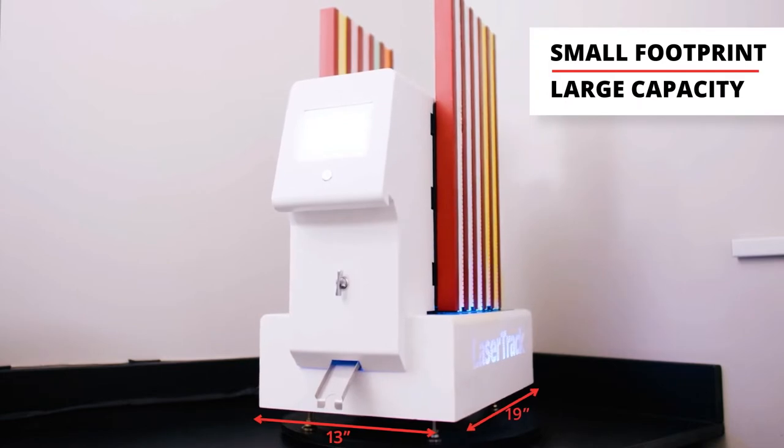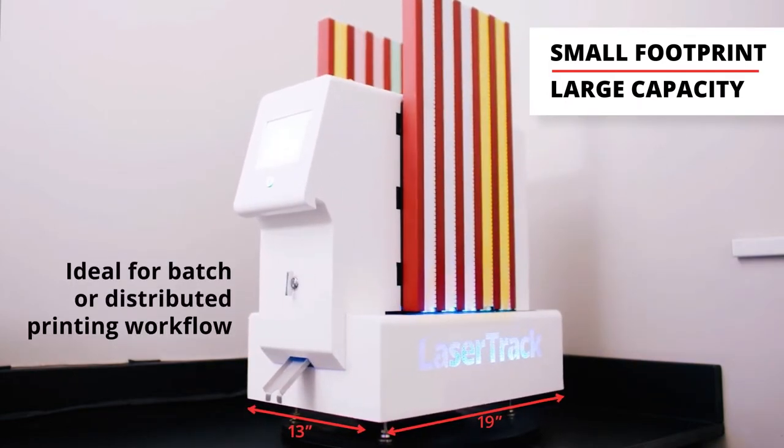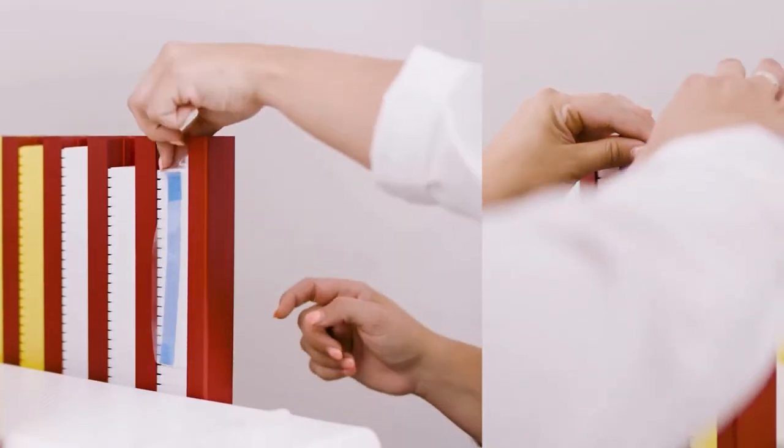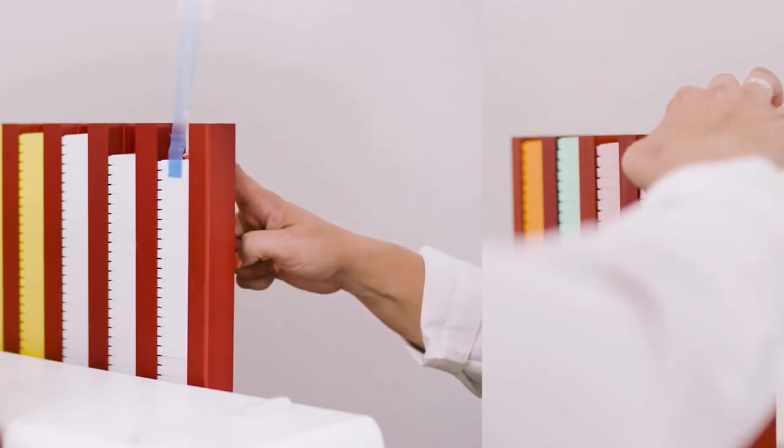With its small footprint, the Lasertrack Flex is ideal for either a batch or distributed printing workflow. Cassettes can easily be loaded on the right or left side, so you can position the Flex where it best fits within your lab's layout and workflow.